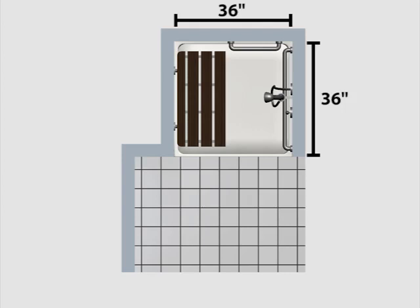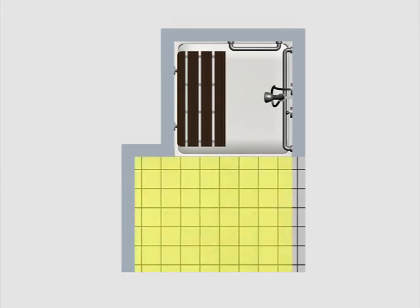Grab bars and shower controls must be within reach from the seat. Clear floor space at the compartment must be at least 36 inches deep and 48 inches long. The length is measured from the control wall so that the clear floor space extends beyond the seat wall at least 12 inches.